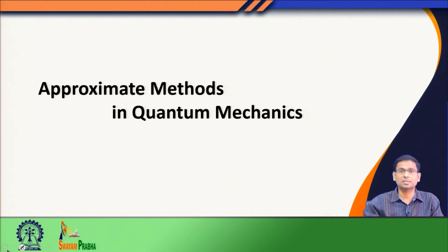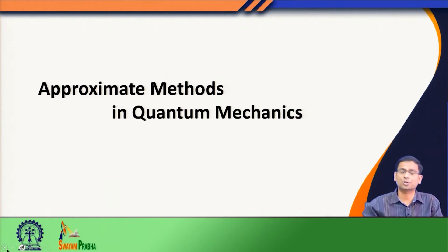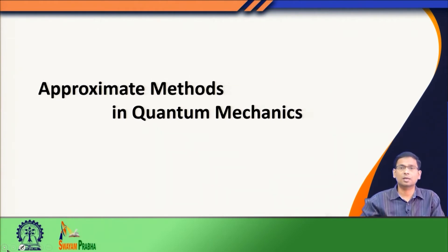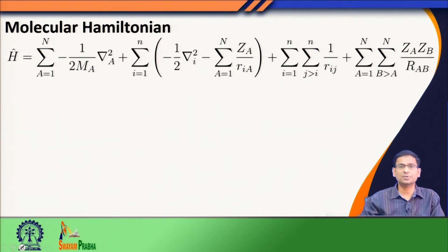In such cases, how can we solve this problem quantum mechanically? The answer lies in what are known as approximate methods in quantum mechanics. From now onwards, we will spend some lectures discussing different approximate methods and how we can use them to solve quantum mechanical problems of our interest. In today's class, before we look for any particular quantum mechanical method, let us first recall what we discussed in an earlier class.